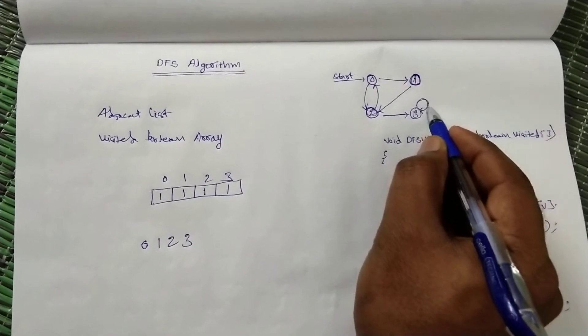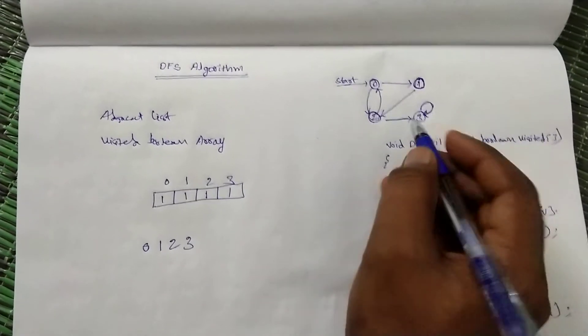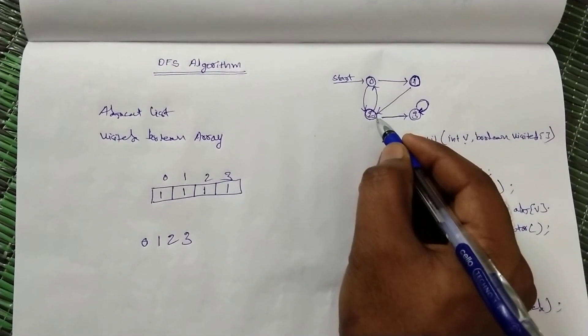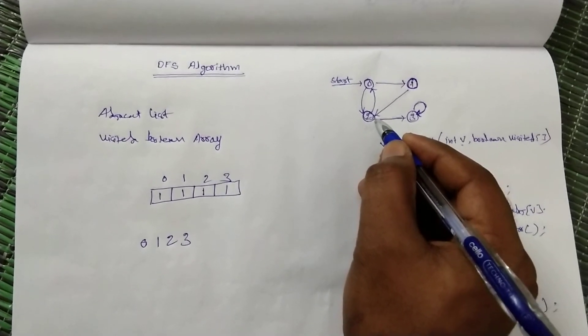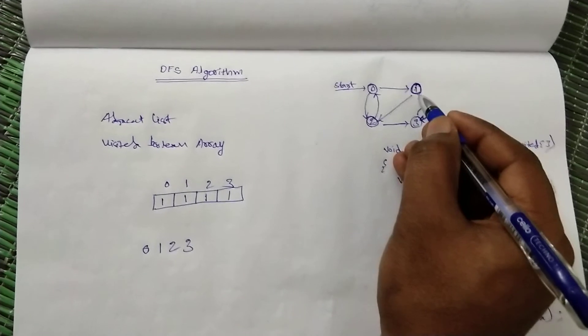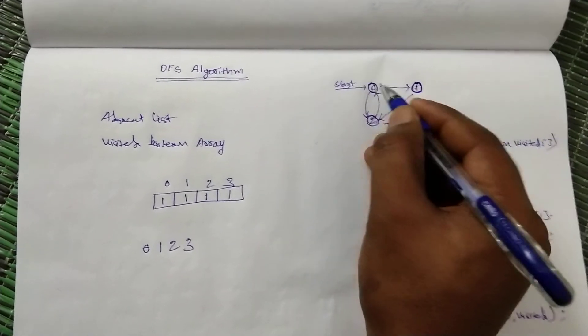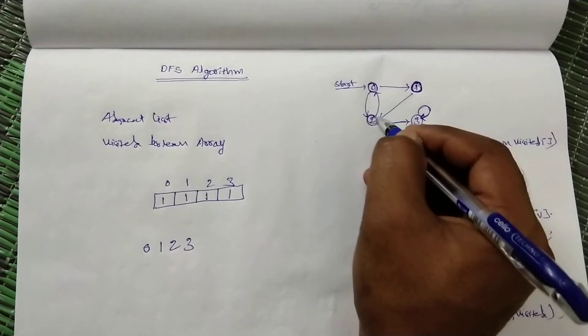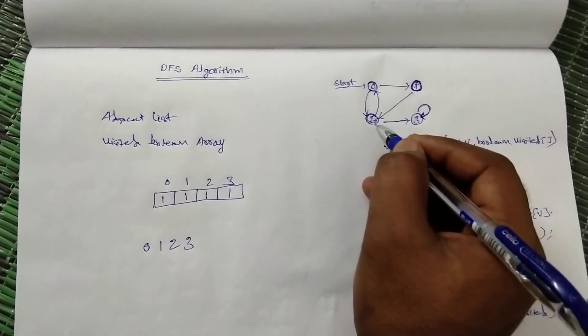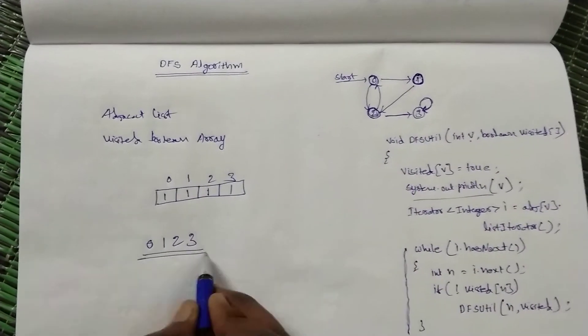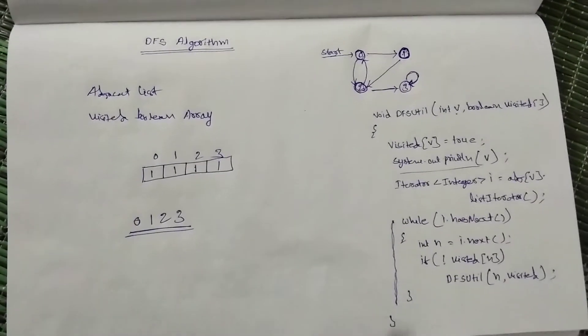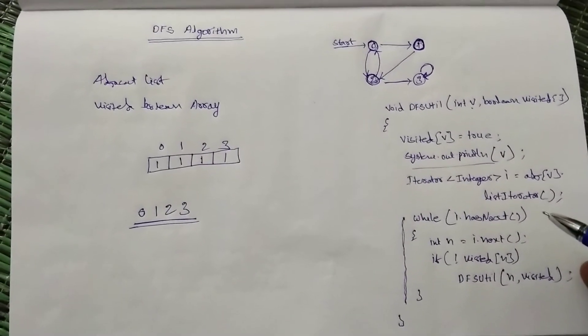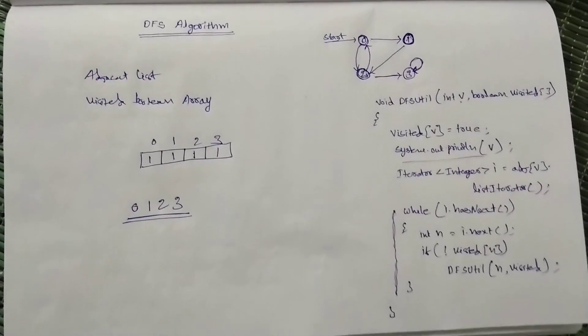0 is already visited, so we will go to 3 and make output. Its adjacent node itself is already visited. Now we will come back to 2 - you don't have any other nodes. Then we will go back to 0. Now we explored 1, now we need to explore other child that is 2. 2 is already visited so we won't go further. This is the output of this DFS algorithm. This is just a small code snippet for DFS algorithm with recursion.